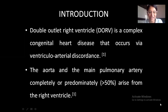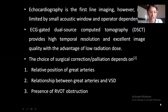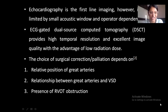Introduction: Double Outlet Right Ventricle is a complex congenital heart disease that occurs via ventriculoarterial discordance. The aorta and the main pulmonary artery completely or predominantly arise from the right ventricle. Echocardiography is first-line imaging, however it is limited by small acoustic window and operator dependence. ECG-gated dual source CT provides high temporal resolution and excellent image quality with the advantage of low radiation dose. The choice of surgical correction or palliation depends on the relative position of the great arteries, the relationship between the great arteries and the VSD, and the presence of right ventricular outflow tract obstruction.